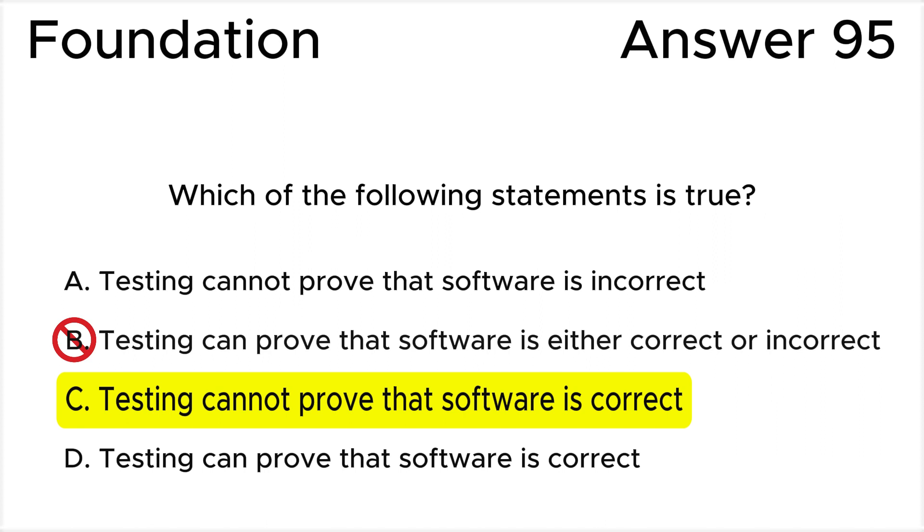Answer B is invalid because testing cannot prove that software is either correct or incorrect. It can only provide evidence of correctness within the scope of the tests conducted.